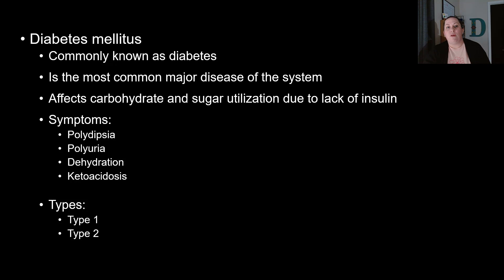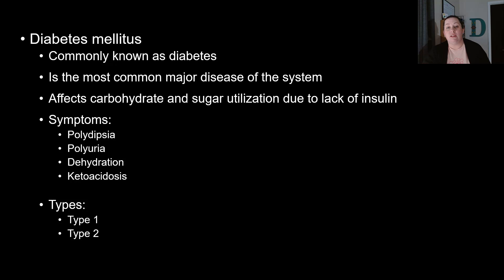One of the main conditions we talk about when dealing with the pancreas and the endocrine system is diabetes mellitus, commonly known as just diabetes. This is the most common major disease of the endocrine system. It affects carbohydrate and sugar utilization by your cells due to the lack of insulin, and so your blood sugars tend to stay high. There are some particular symptoms that come along with diabetes mellitus. One is polydipsia — excessive thirst that the patient will experience.